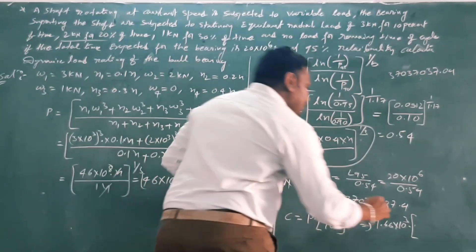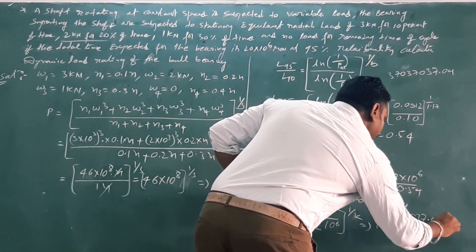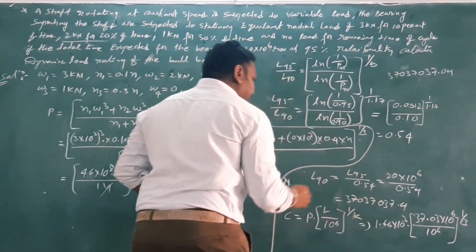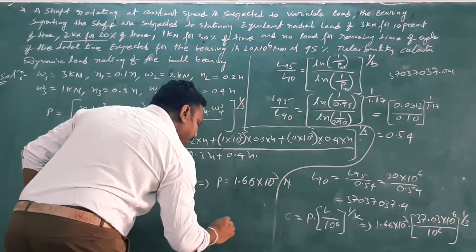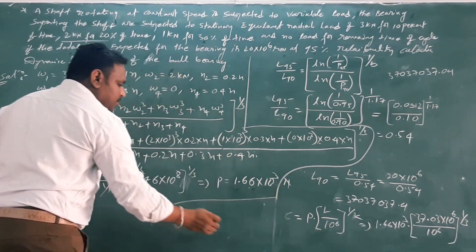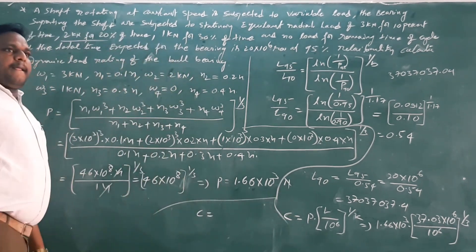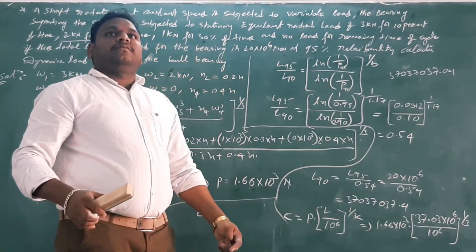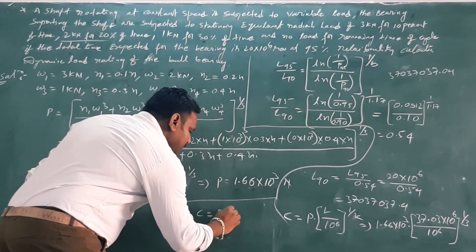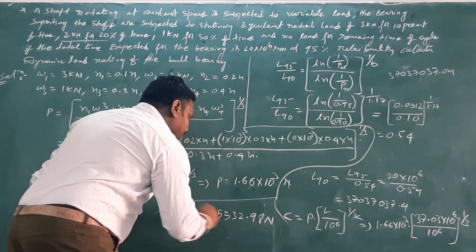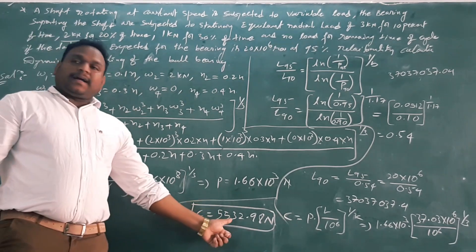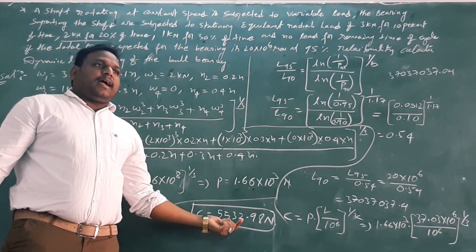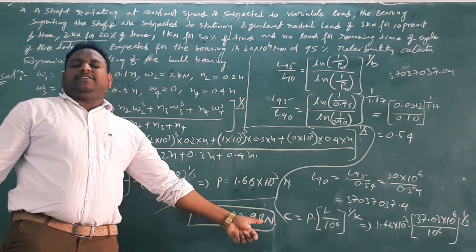The computed values are approximately 10.6 and 4.5, giving a result of 4.5 to 3. The dynamic capacity C is difficult to compute directly. After calculation, values around 5.5 to 5.6 are obtained. Finally, the dynamic load capacity of the ball bearing is determined.